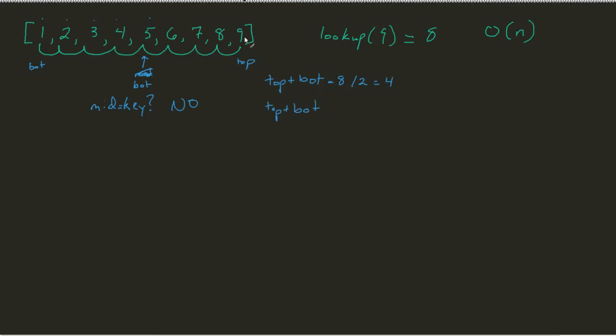That mid is too small, so we would say it becomes the new bot, and I recalculate out my top plus bot again. This time, it's 8 plus 4, which is 12, divided by 2, equals 6. Now I'm at 7. This is now my mid.